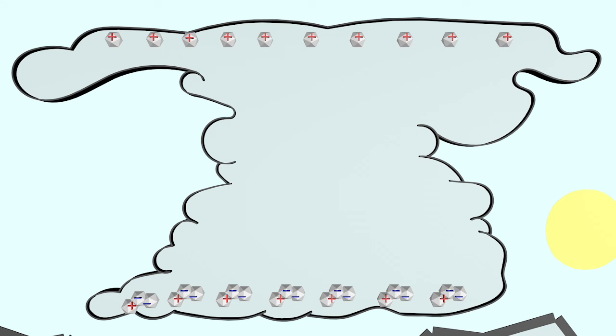This creates a large difference in charge. Nature doesn't like excessive imbalances, and the negative charges are now looking for a way to neutralize themselves with positive charges. This now creates lightning. Most lightning occurs within a cloud.